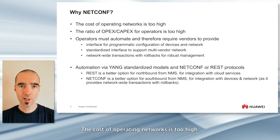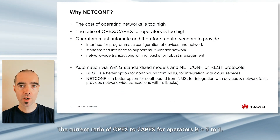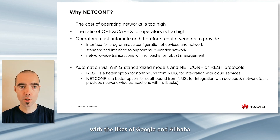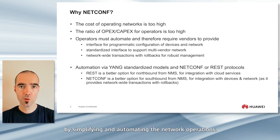The cost of operating networks is too high. The current ratio of OPEX to CAPEX for operators is greater than 5 to 1. Operators must reduce this ratio to stay competitive with the likes of Google and Alibaba by simplifying and automating the network operations.